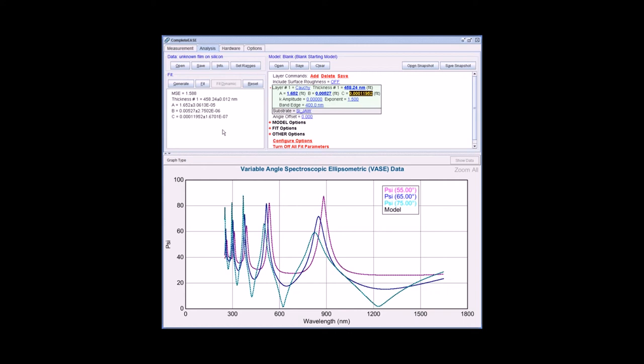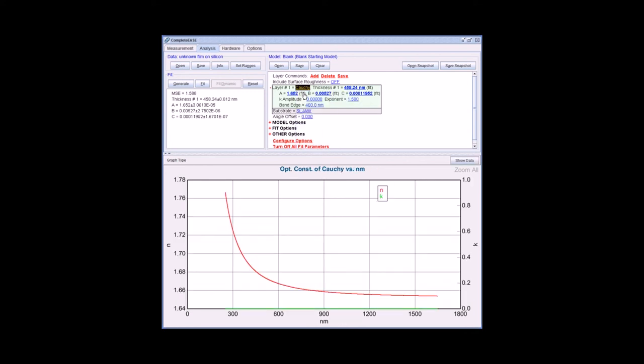I have the thickness reported here. If I want to view the resulting optical constants, I can right click on the Cauchy layer, select graph layer optical constants. Now these are displayed in the graph panel. I can right click, copy graph or copy data to clipboard, paste in Excel or any other program.